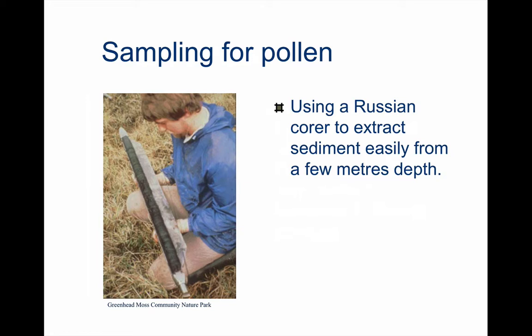You can see a geologist here having sampled a peat bog using this fairly simple manual device called a Russian corer that's pushed down into the ground to a measured level, rotated through 180 degrees and simply pulled back out again, giving us a continuous core of unconsolidated sediment from which we can take samples of about a cubic centimetre at each level we want to sample — more than enough pollen to be able to analyse.